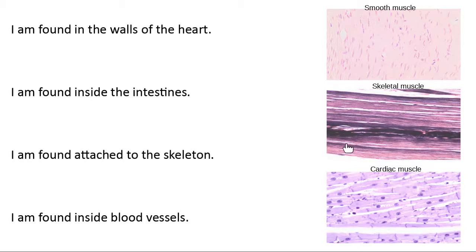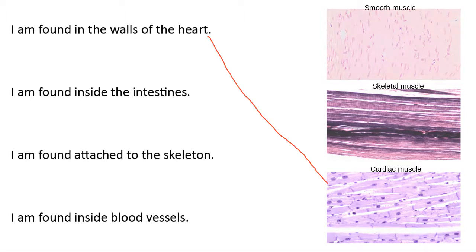The type of muscle tissue that makes up the walls of the heart is cardiac muscle tissue. Fun fact: cardiac muscle tissue is only found in the heart — that's the only place we find it. When we start talking about some of these other types of muscle tissue, we find them in multiple places, but cardiac muscle tissue is only found in one.